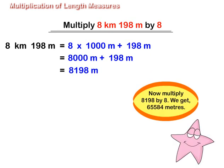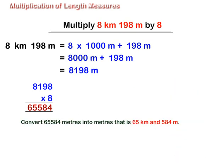Now multiply 8,198 by 8. We get 65,584 m or 65 km 584 m.